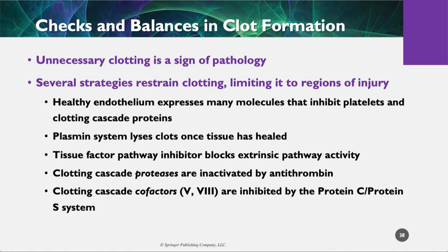The tissue factor pathway blocks extrinsic pathway activity. We always want the intrinsic and extrinsic to be somewhat against each other so there's a check and balance system. The proteases are inactivated by antithrombin. The clotting cascade cofactors are inhibited by the protein C and protein S system — that's why when there's protein C and S deficiency it's a hypercoagulable state. Just appreciate the fact that while the body is trying to clot, there are complementary components trying to prevent clot and dissolve clot to make sure that once you start clotting your body doesn't just clot entirely.